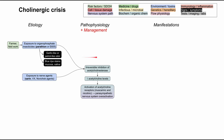Another cause of acetylcholinesterase inhibition is exposure to nerve agents, including sarin, VX, and Novichok agents, typically seen in a military or war setting. These are odorless and tasteless agents, so you won't be able to identify them the way you could parathion.